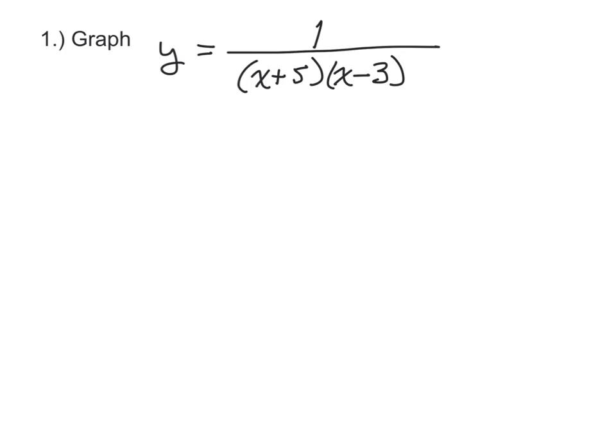I'll show you how with this one. If we have y equals 1 over the product of (x plus 5) times (x minus 3), we're going to use a sign chart to help us graph it. A sign chart is just a number line, and this number line is our x-axis. On this x-axis, we want to first identify any asymptotes.